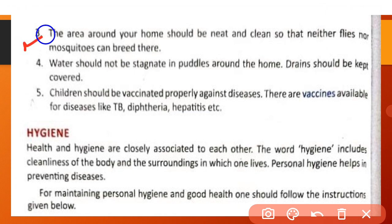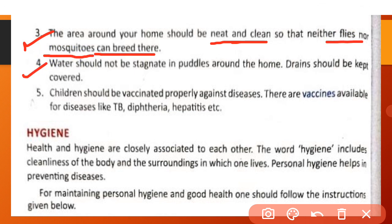Third precaution: the area around your home should be neat and clean so that neither flies nor mosquitoes can breed there. Fourth: water should not be stagnant in puddles around the home, and drains should be kept covered.